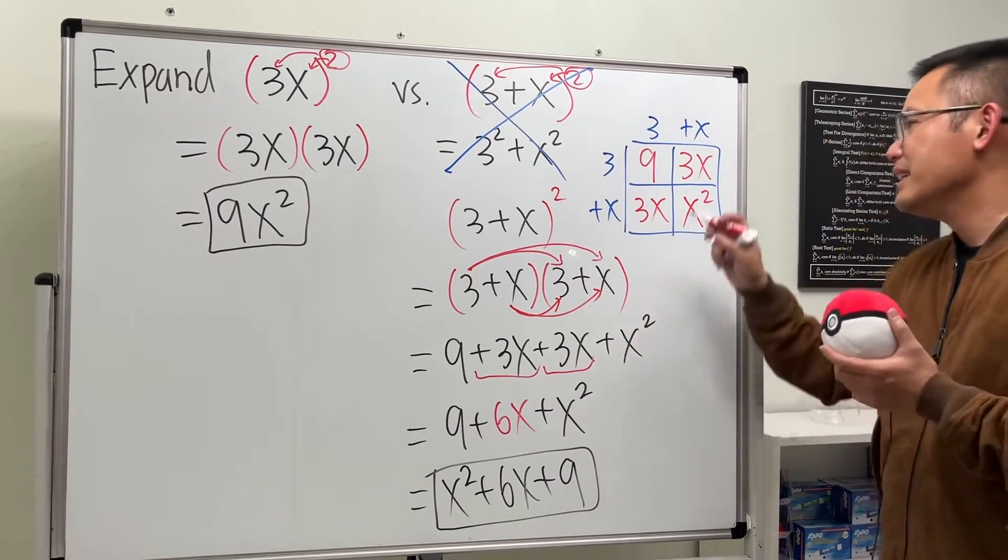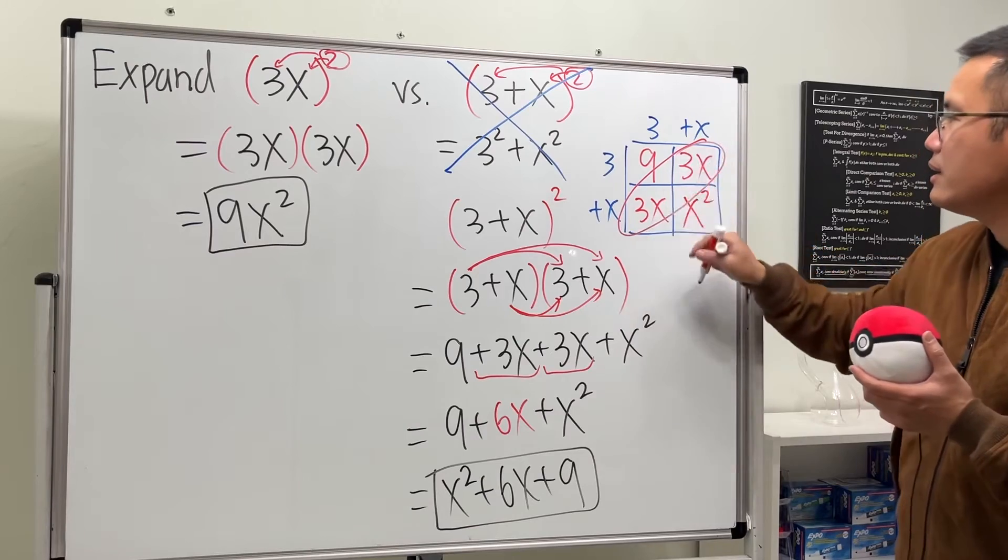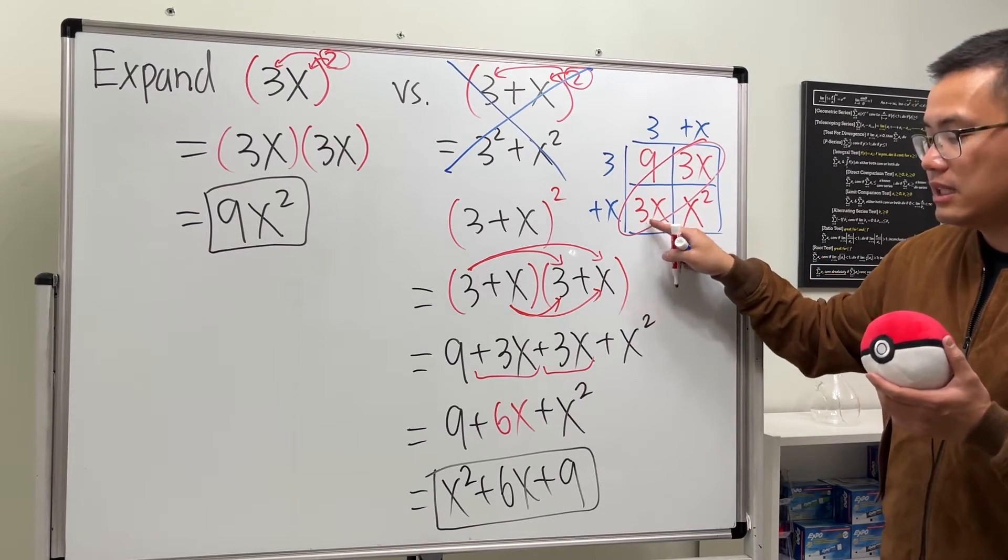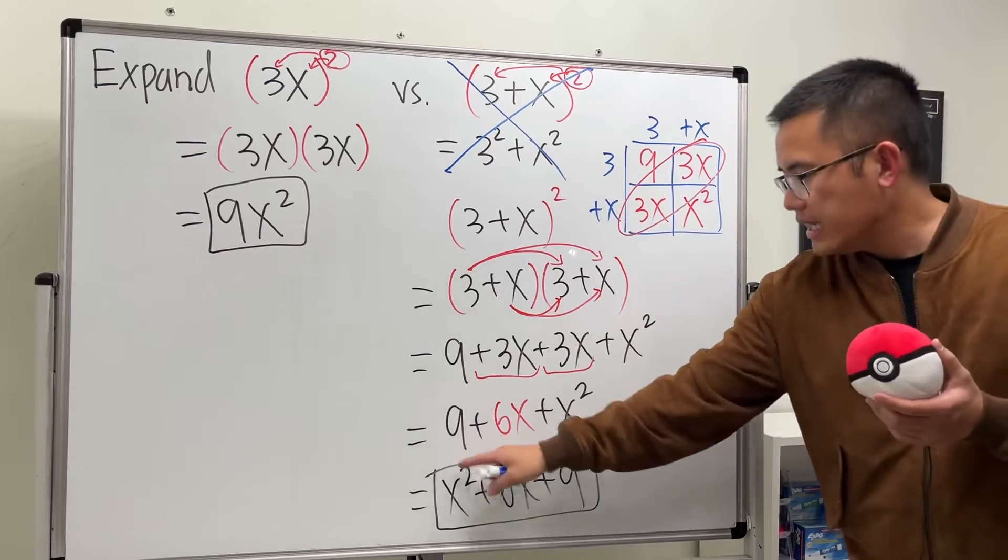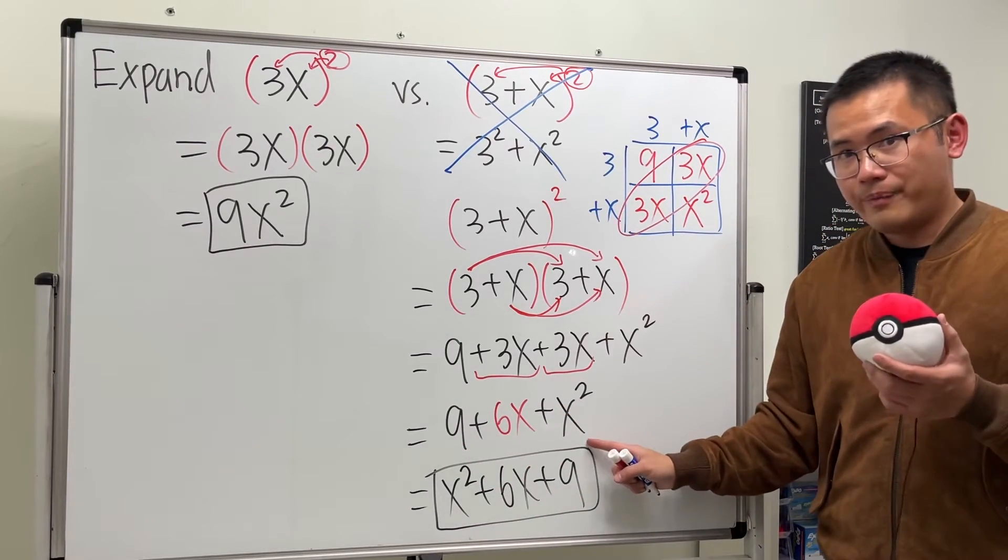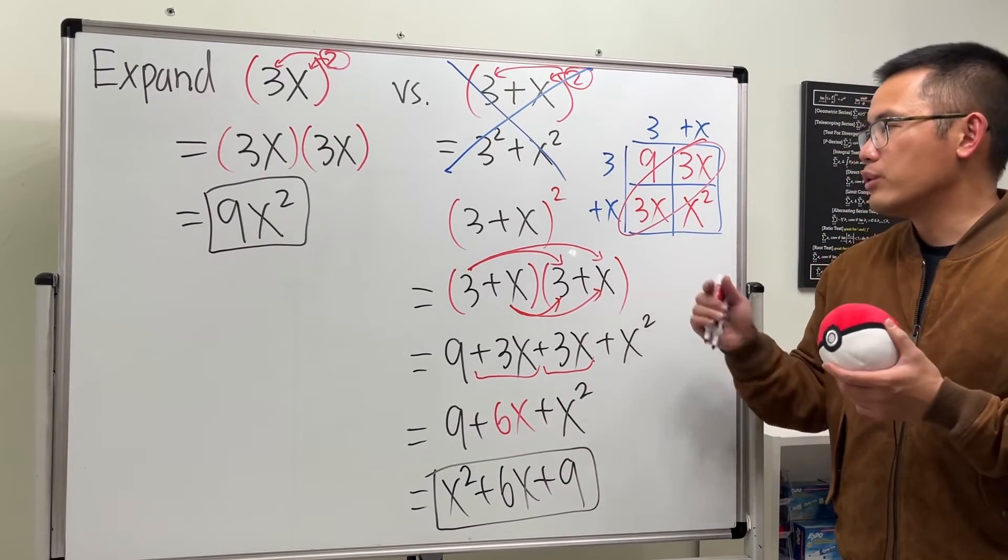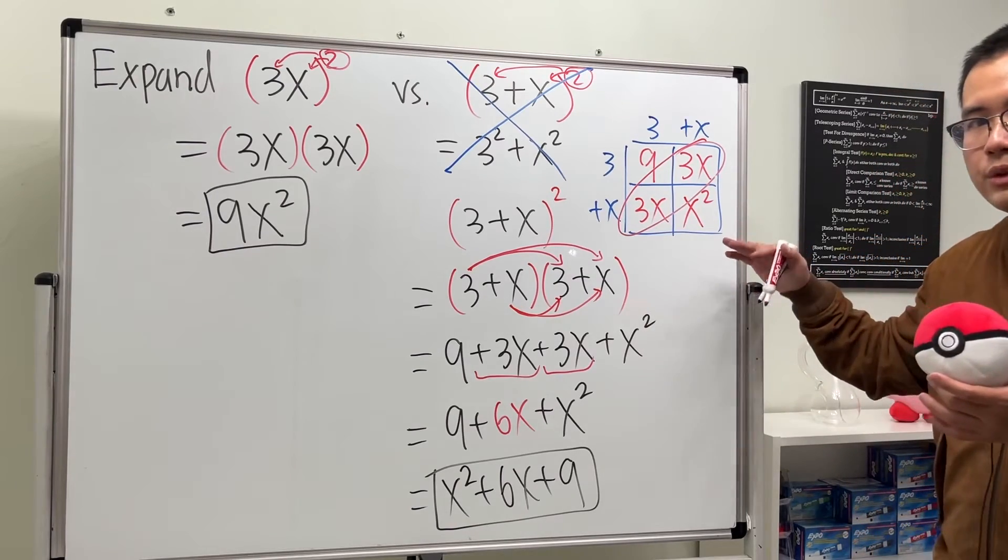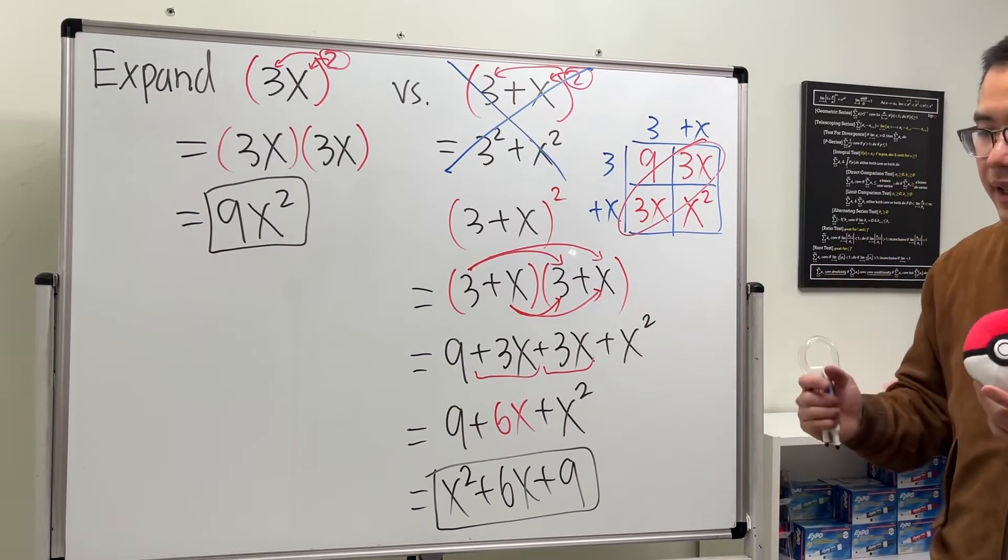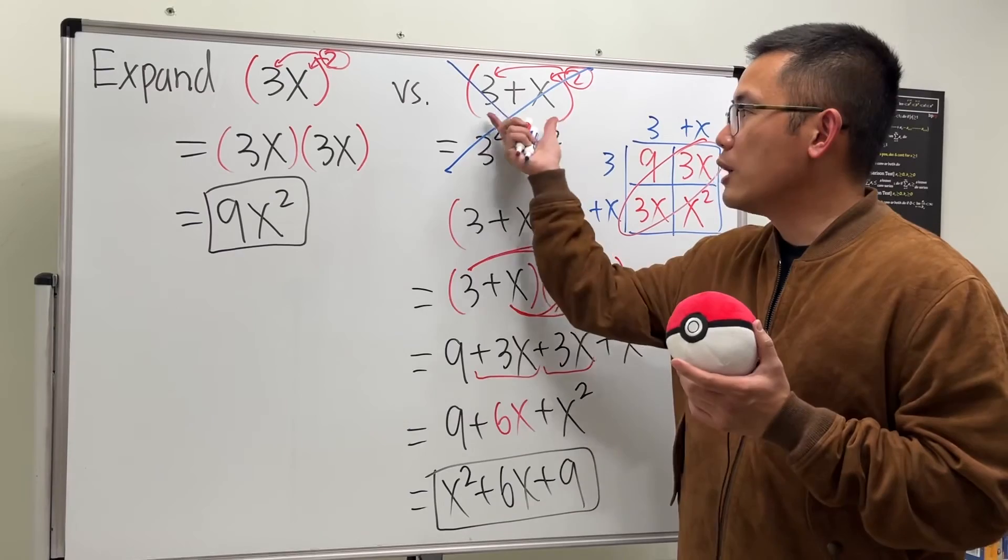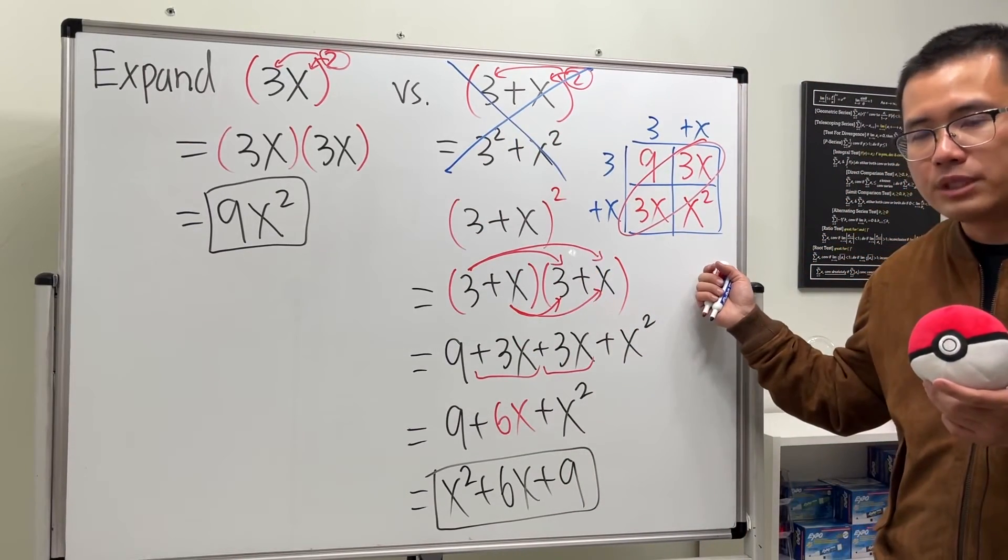And we see that in the diagonal here, 3x + 3x does give us the 6x, and then we have the 9 and we have the x². I will recommend this method to the students if you would like to visually see it. And another thing is when we have more terms inside, the box method multiplication will work so much better. It's more organized.